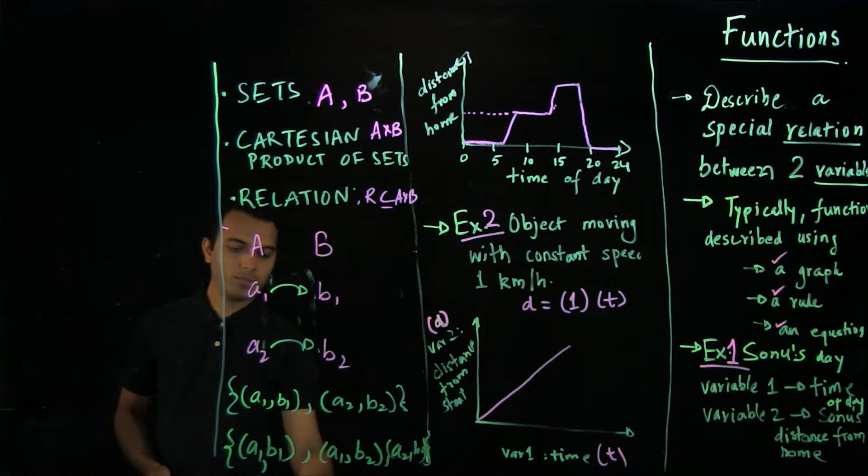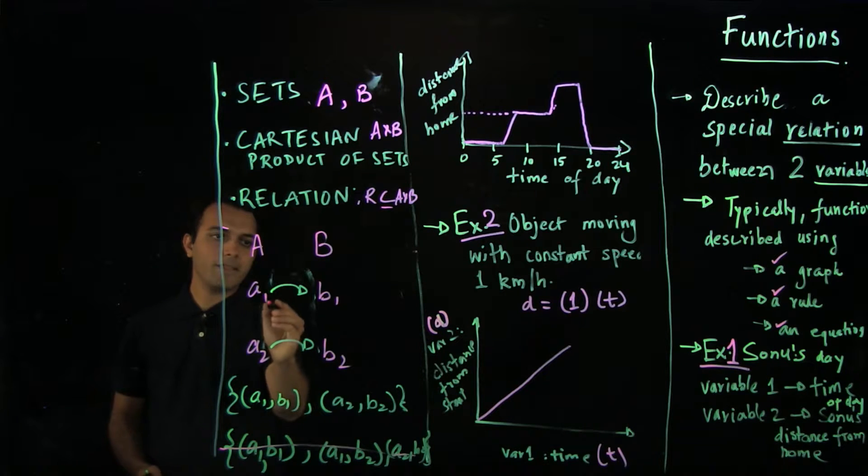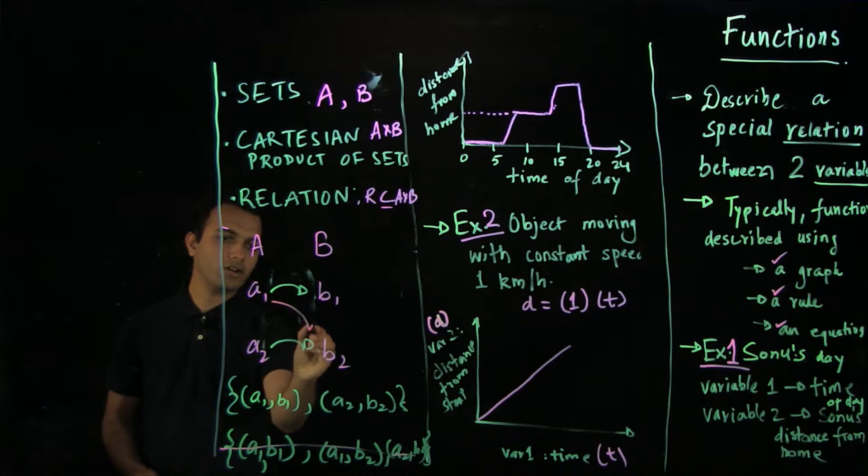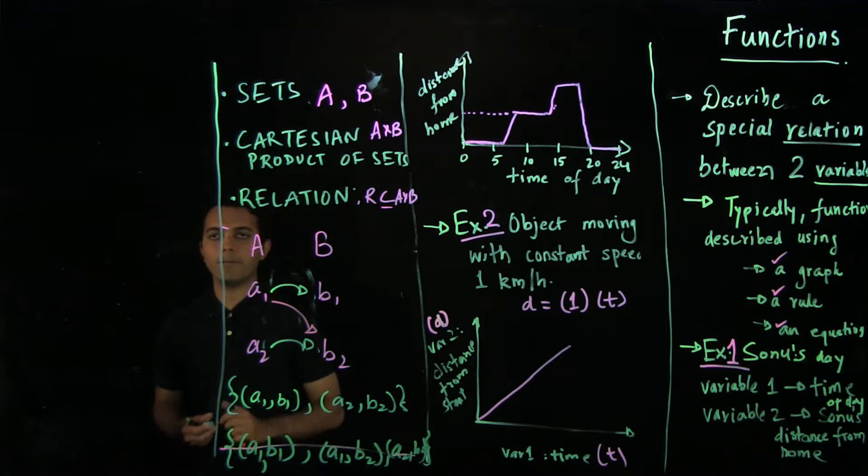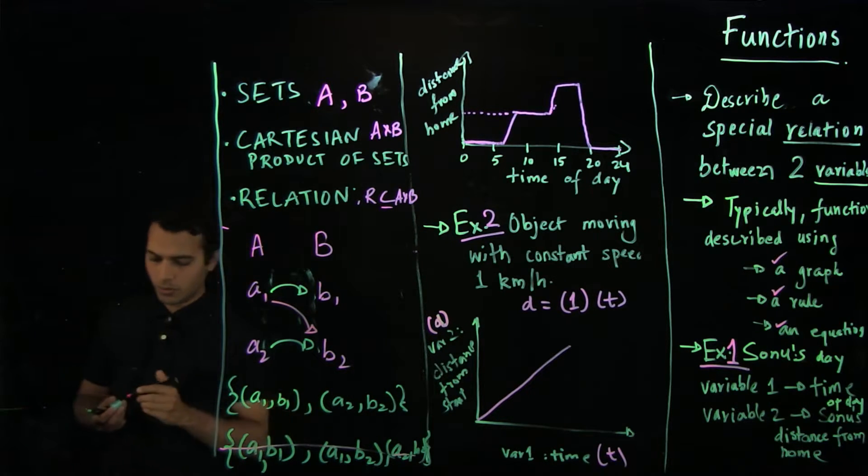then this one will not be a function, because we have this extra set, extra a1 comma b2, which makes it not a function.